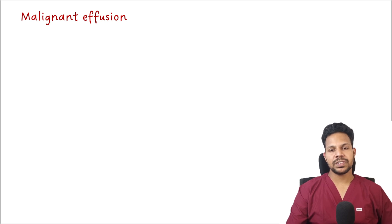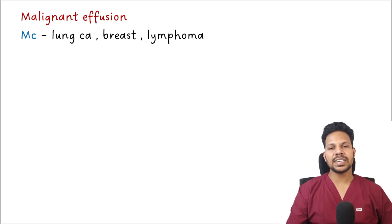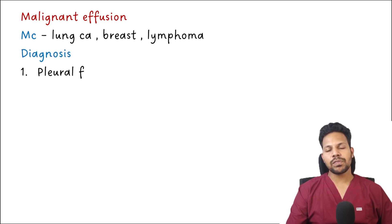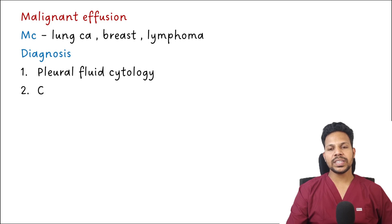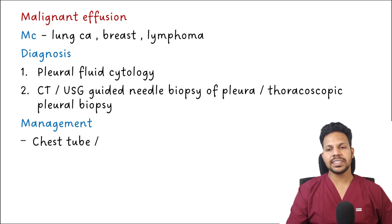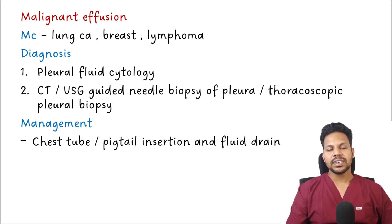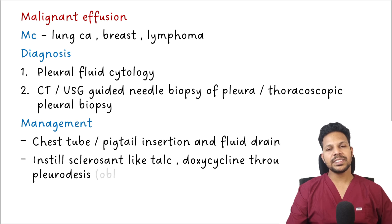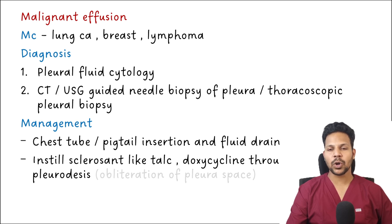For malignant pleural effusion, the most common causes are lung carcinoma, breast cancer, and lymphoma. Diagnosis requires pleural fluid cytology, and if cytology is non-diagnostic, a CT or ultrasound-guided needle biopsy or thoracoscopic pleural biopsy is needed. Management involves pigtail or tube insertion for continuous drainage, followed by instillation of a sclerosant — talc or doxycycline — through the intercostal tube for pleurodesis, which obliterates the pleural space to prevent fluid reaccumulation when the underlying malignancy cannot be controlled.